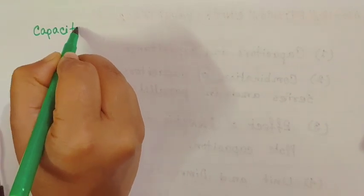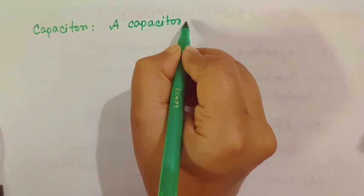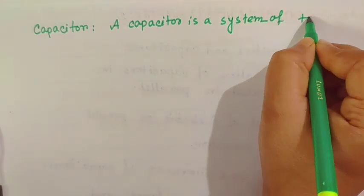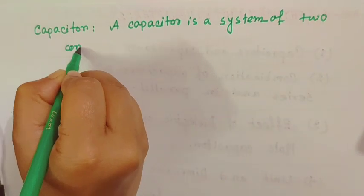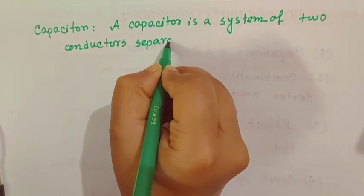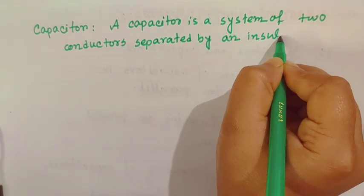First one is capacitor. So what is a capacitor? A capacitor is a system of two conductors separated by an insulator.